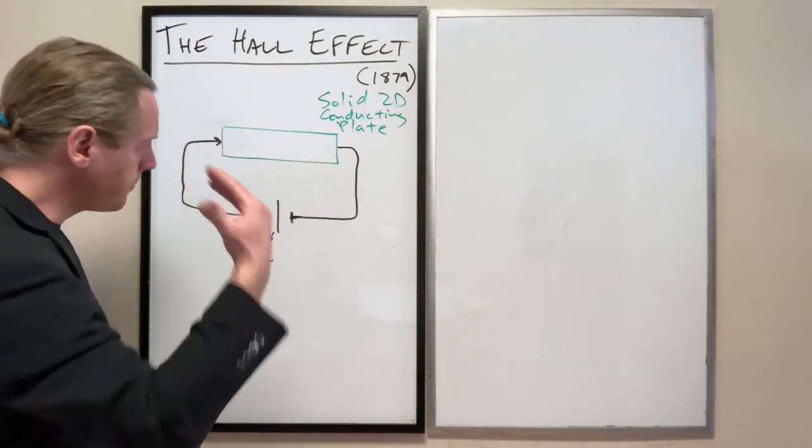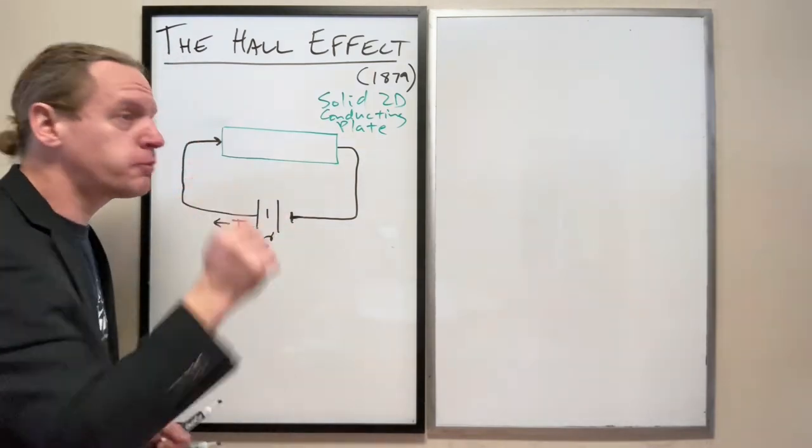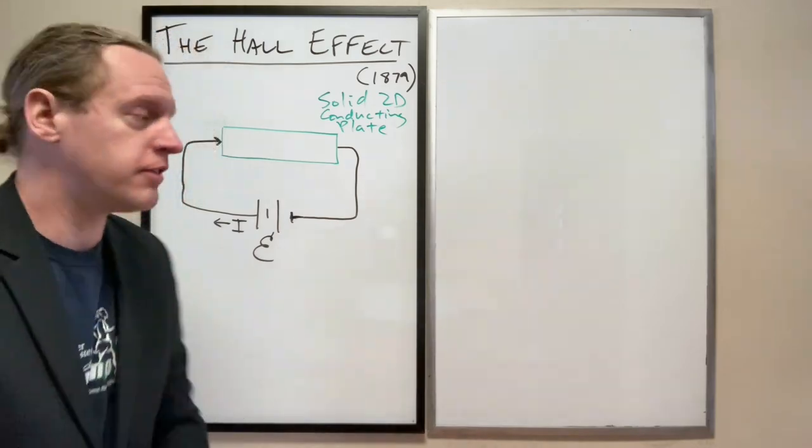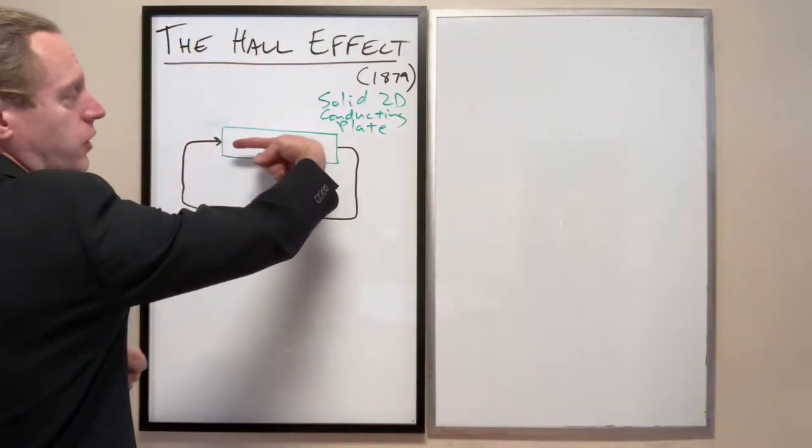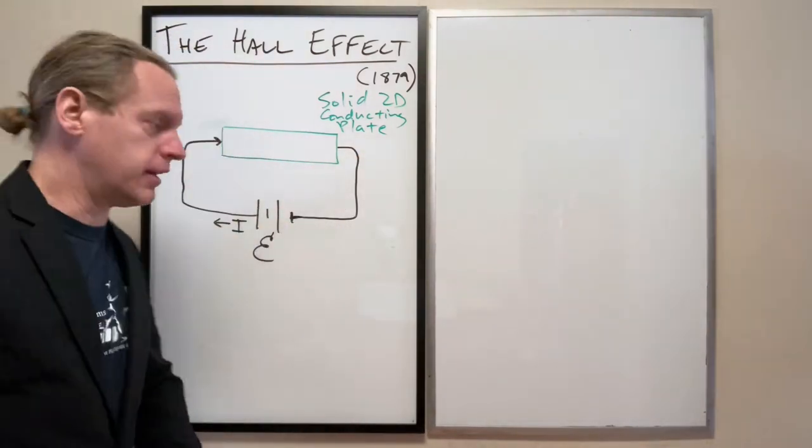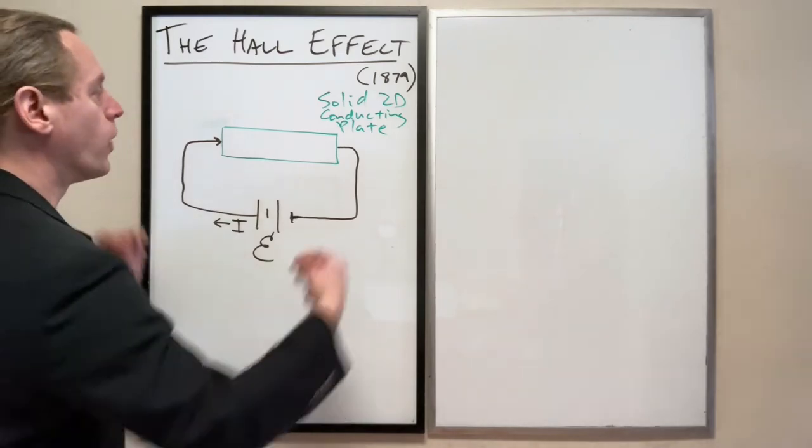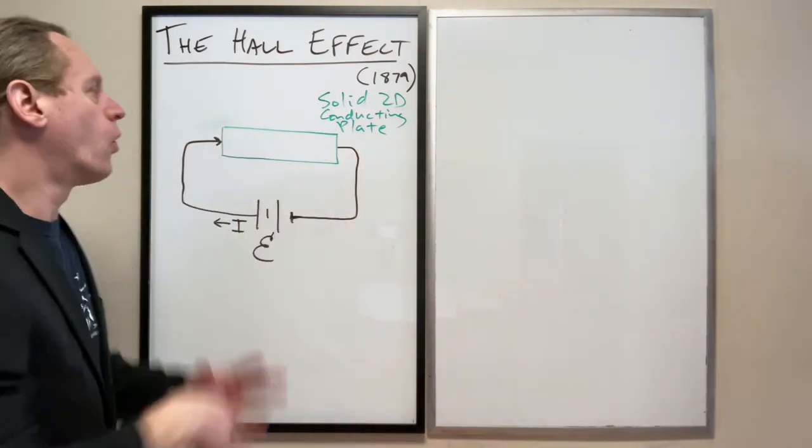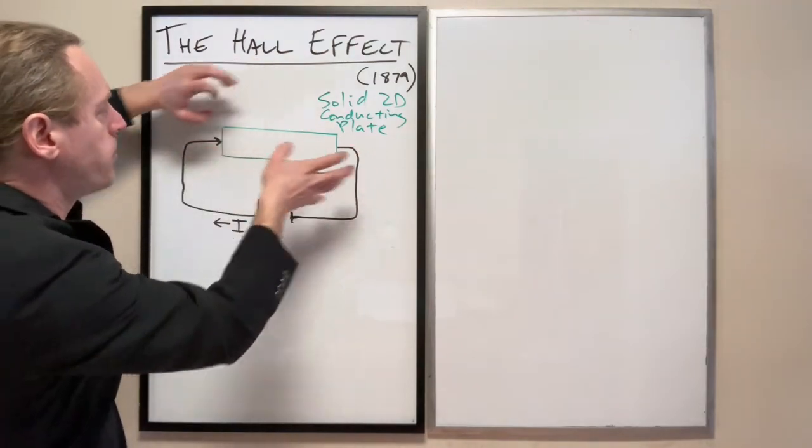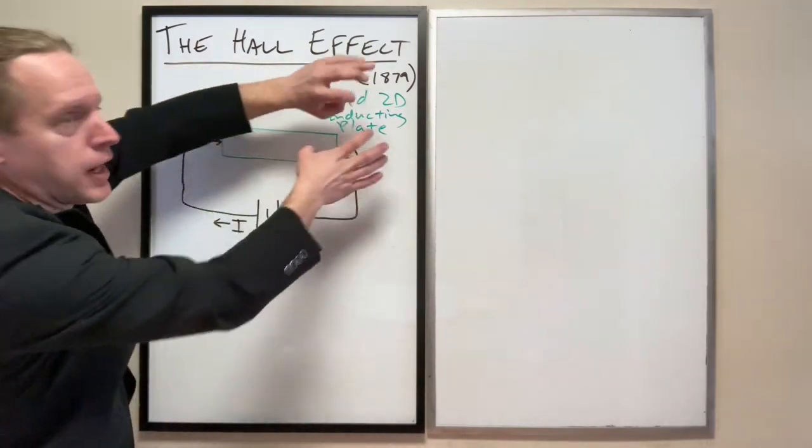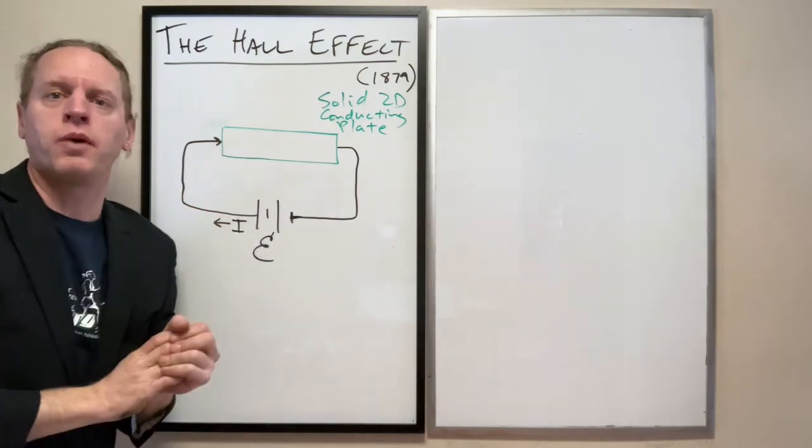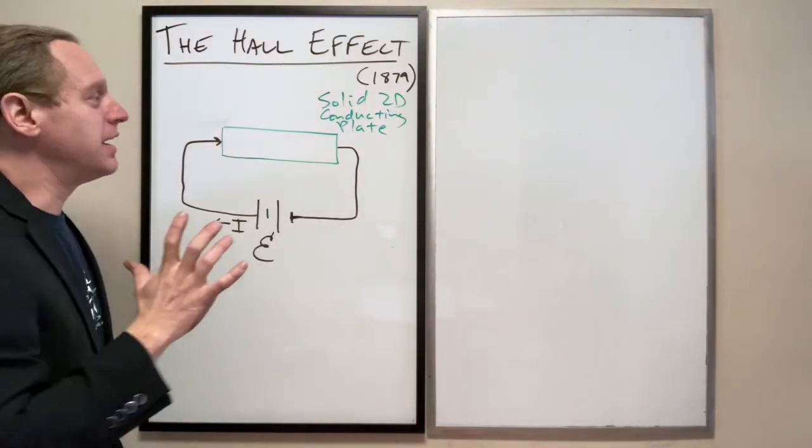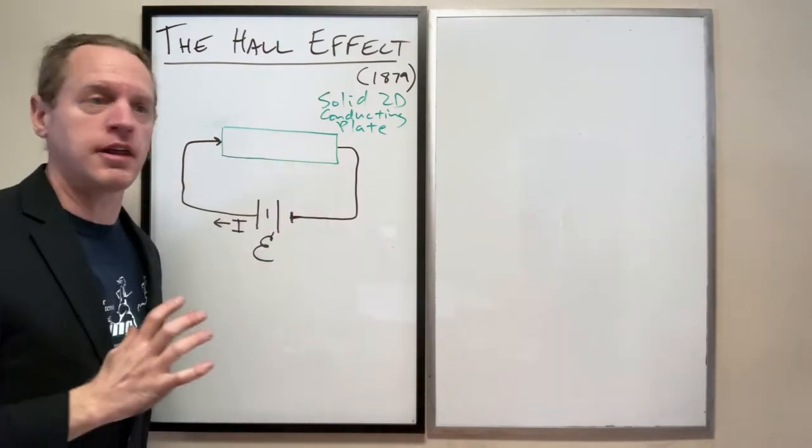And so now typically what would happen if you run this experiment, whatever particles are moving, whether they're positive ones going that way or negative ones going that way, if you just crank the voltage on, whatever the thing is, it's moving will more or less go right along the center here, or at least an equal number will pass on the left and the right or the top and the bottom, whether they're going that way or this way. However, once we change something about the setup, it's going to fundamentally change the prediction that we're going to see.